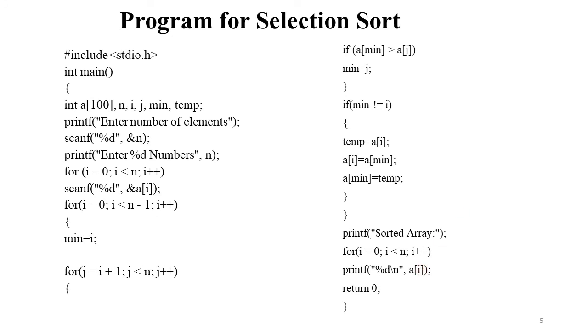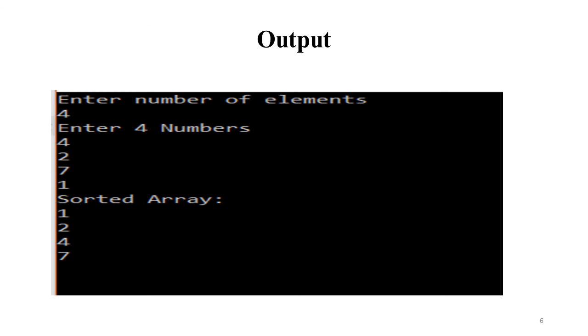I hope the program is clear — it follows directly from the algorithm. For the output: we enter the number of elements as 4, then enter 4 unsorted numbers: 4, 2, 7, and 1. The output sorted array is 1, 2, 4, and 7. I hope all of you understand the working of selection sort. Please practice the example, algorithm, and program for selection sort. Thank you.